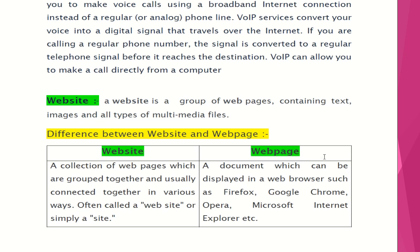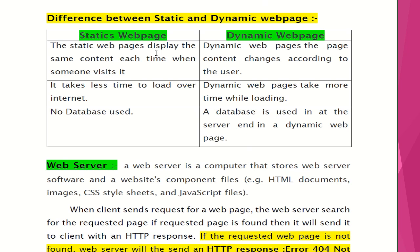A web page is a document which can be displayed in a web browser such as Firefox, Google Chrome, Opera, or Microsoft Internet Explorer. There are two types of web pages: static and dynamic. Static web pages display the same content each time they are visited, and they take less time to load because the content remains the same. Dynamic web pages change according to the user and take comparatively more time to load than static ones.